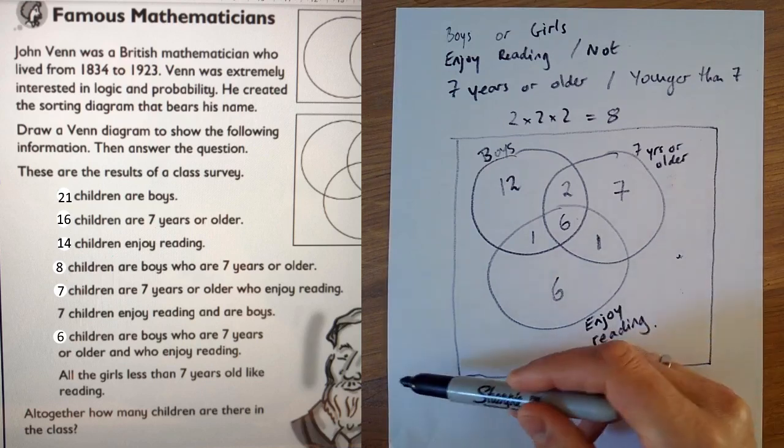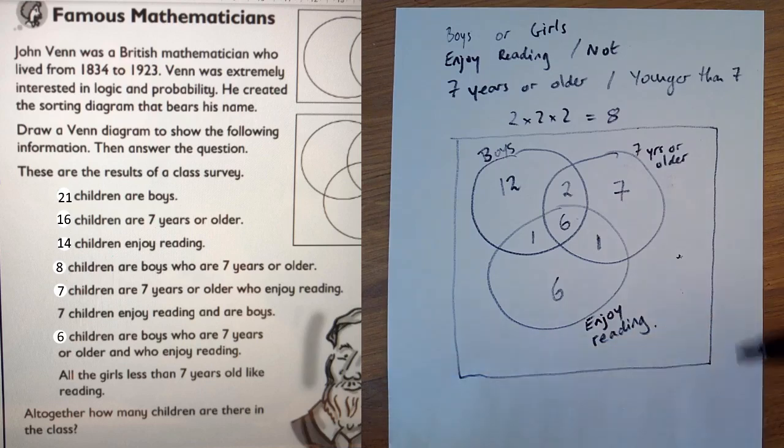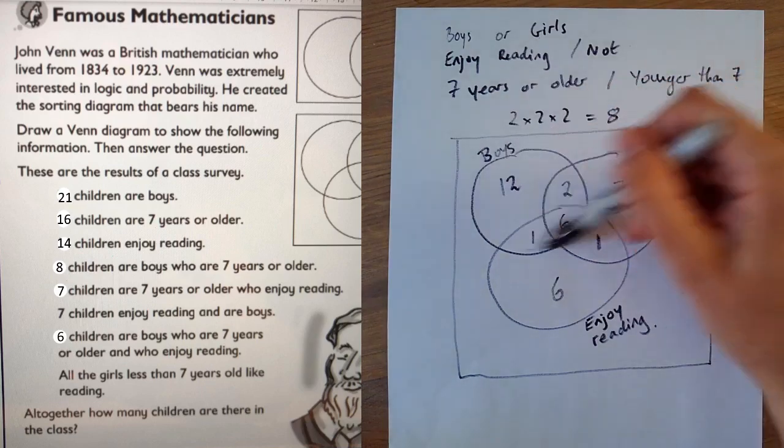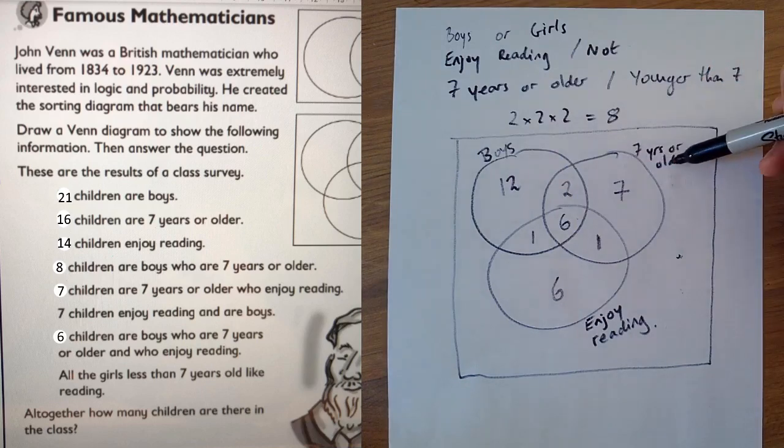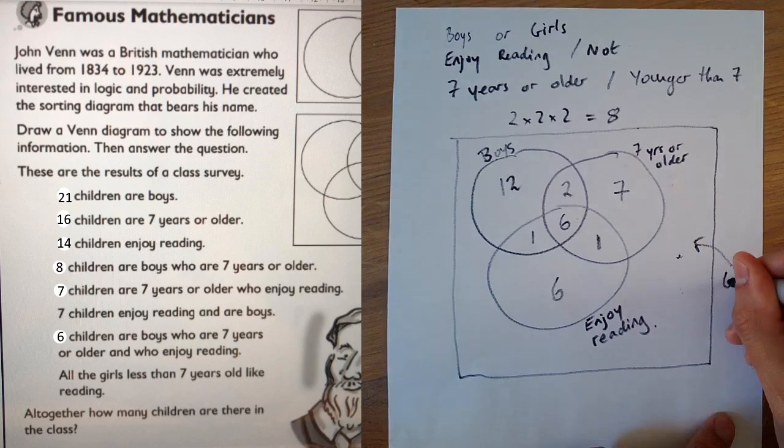Now hopefully you're kind of wondering but what about this eighth category here? Well because of that last comment all the girls less than seven years old like reading. These people here are girls and they're less than seven years old and they don't like reading. Think about the circles we've drawn. They're not in the boys' circle so they're girls. They're not seven years or older so they're under seven. Let's write this down. Girls under seven and they don't enjoy reading because they're outside this circle as well.